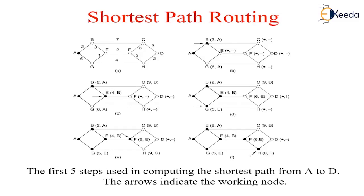As shown in the figure, initially each node is labeled with its distance from the source node along the best known path. Initially, no paths are known, so all nodes are labeled with infinity. As the algorithm proceeds, the paths are found, the labels may change, reflecting better paths. A label may be either tentative or permanent. Initially, all labels are tentative. When it is discovered that a label represents the shortest possible path from the source to that node, it is made permanent and never changed thereafter.